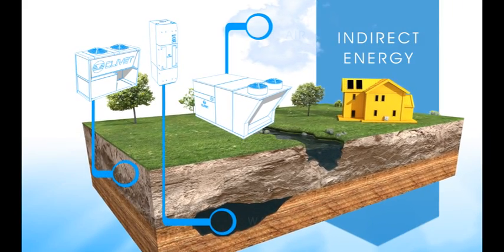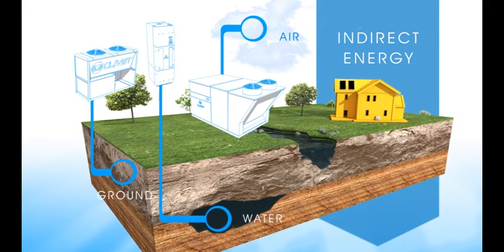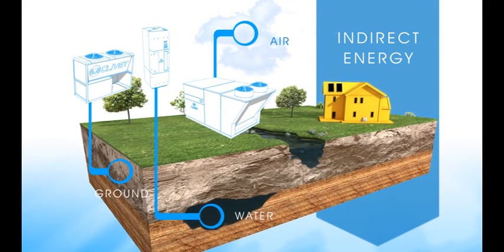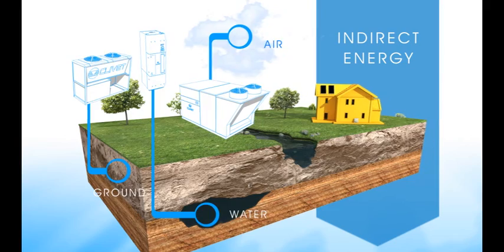Indirect energy is the one that the sun provides to the ground, air, and water. Heat pumps use this energy to create comfort in buildings.